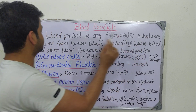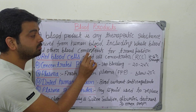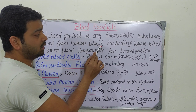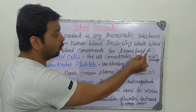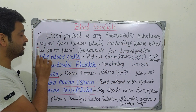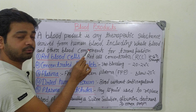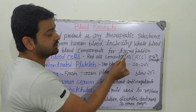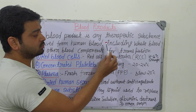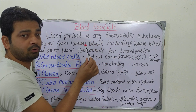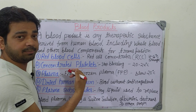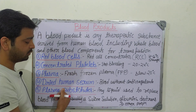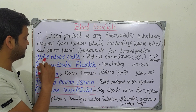Any therapeutic substance derived from human blood — that is what a blood product is. It may include whole blood or other blood components like WBC, RBC, platelets, and thrombocytes, all those things for transfusions. Overall, blood products are products obtained from human blood.